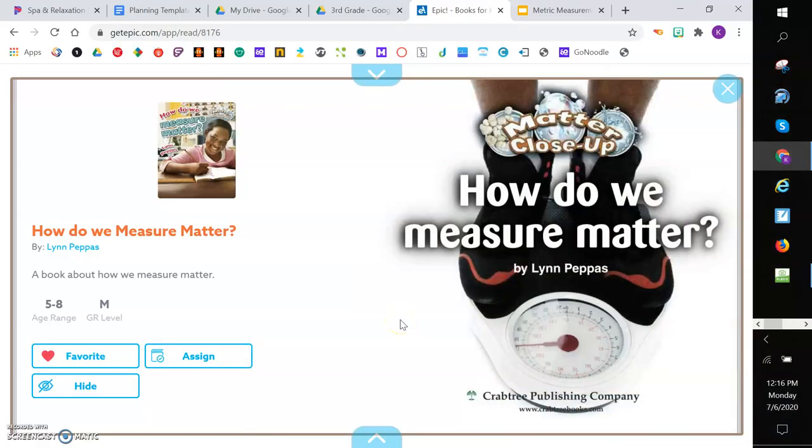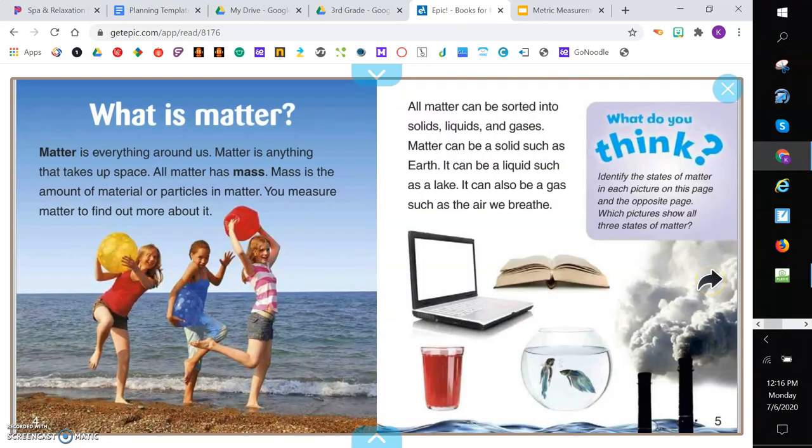This book again is called How Do We Measure Matter? What is matter? Matter is everything around us. Matter is anything that takes up space. All matter has mass. Mass is the amount of material or particles in matter. You measure matter to find out more about it.